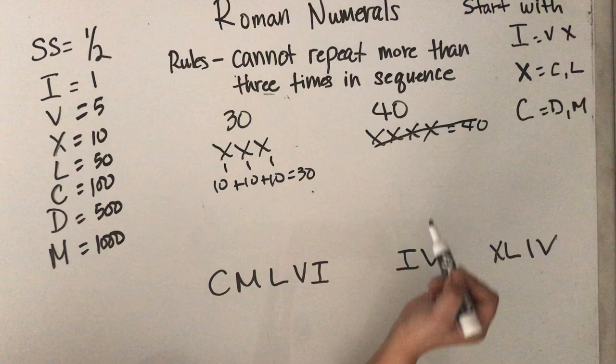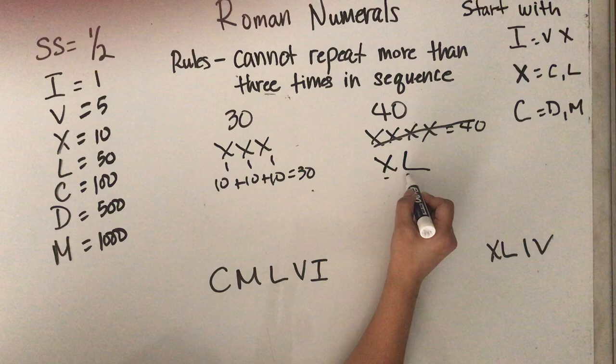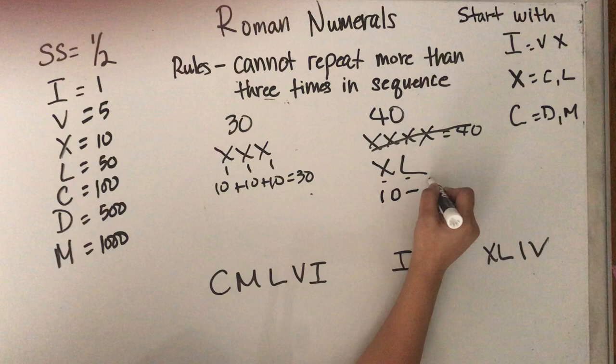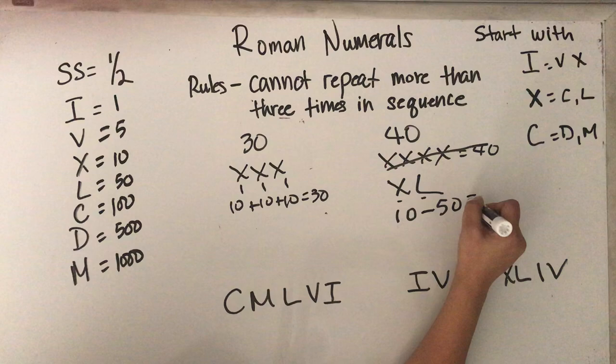40 is written by X, L. So when there's a lower number next to a high number, 10 minus 50, you have to minus. So this is smaller than L, so then you have to minus. So 10 minus 50 equals 40.